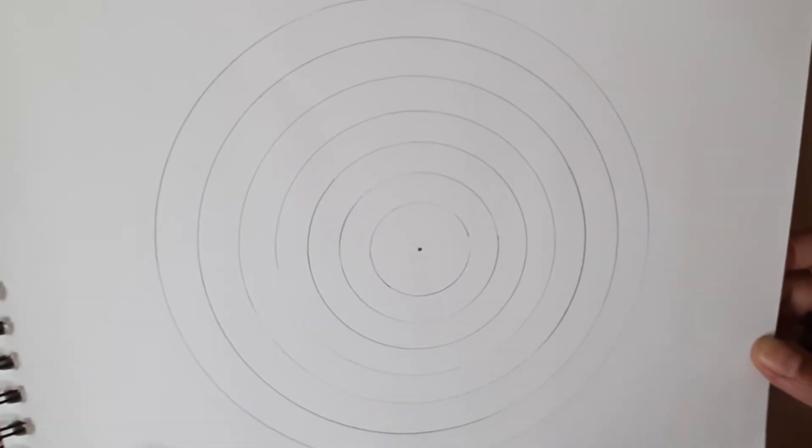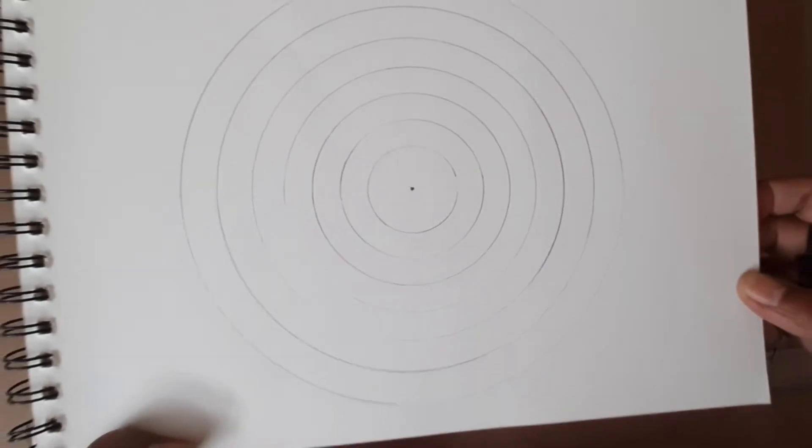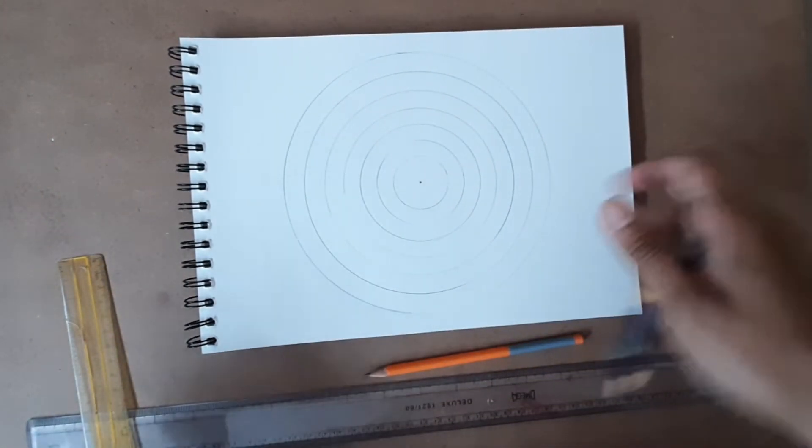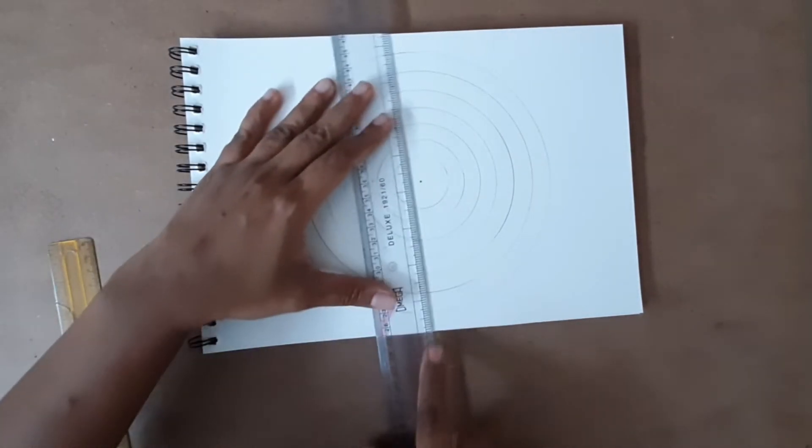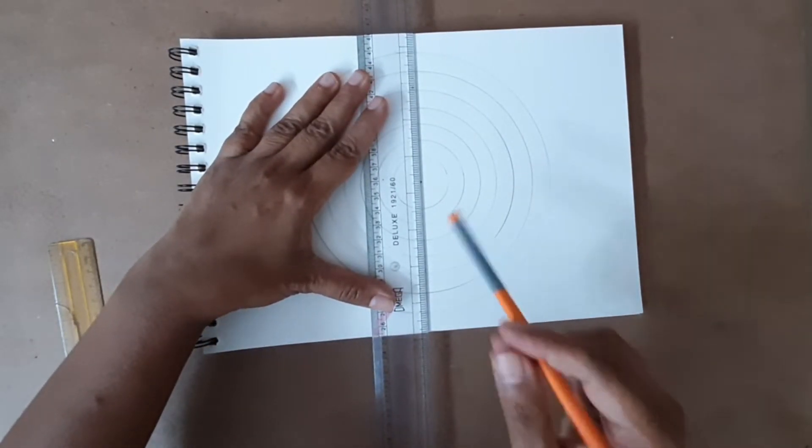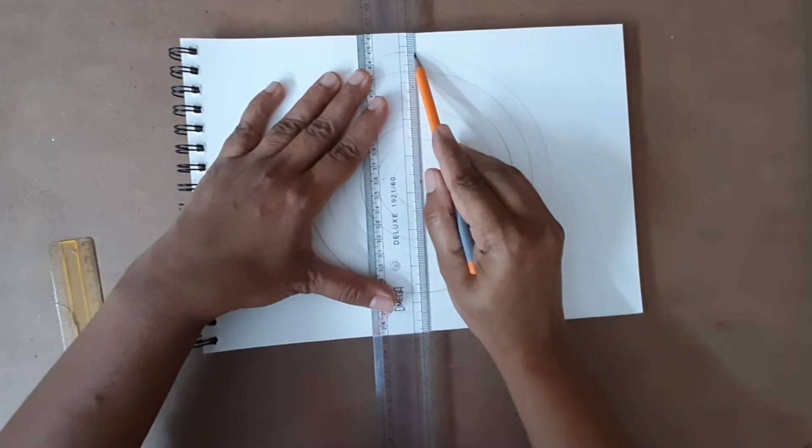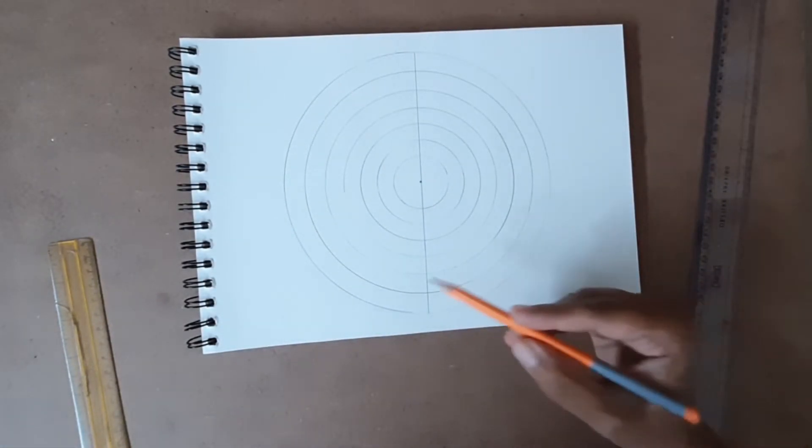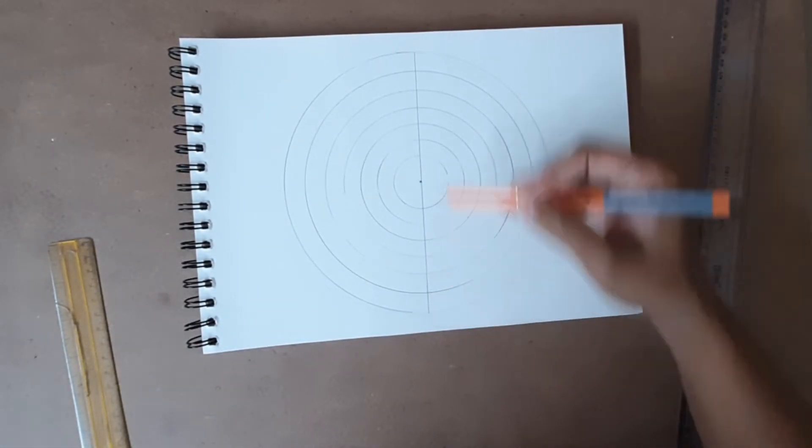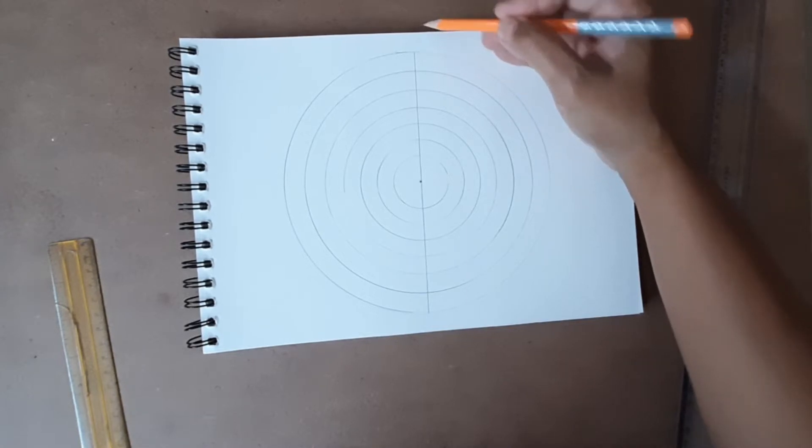We are done with the circling part. Now we will draw a line in the center. Let the line not move out of the circle - it should be within the circle like this. See, the line I have drawn is within the circle. It has not moved outside.